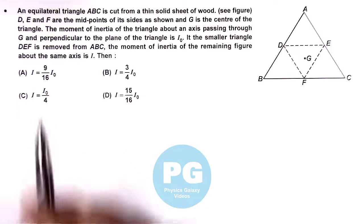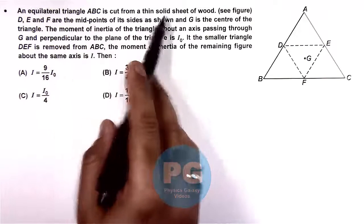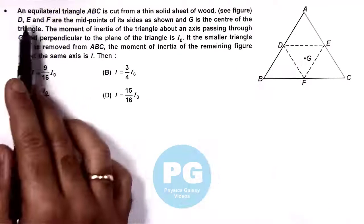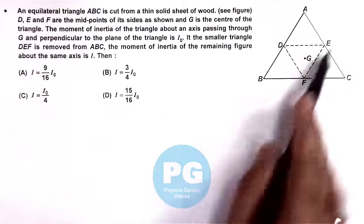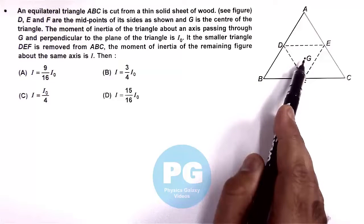In this question, we are given that an equilateral triangle ABC is cut from a thin solid sheet of wood. In this equilateral triangle, points D, E, and F are the midpoints of the sides and G is the centroid.